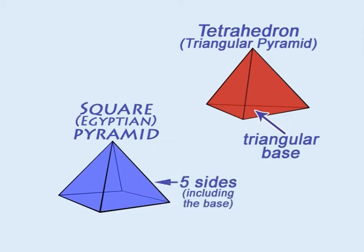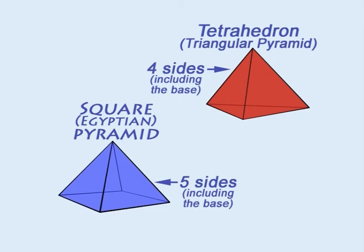The square pyramid has five sides, but the tetrahedron has only four sides, making it the simplest polyhedron of all.